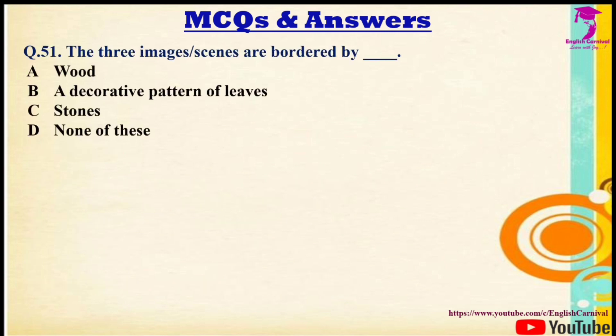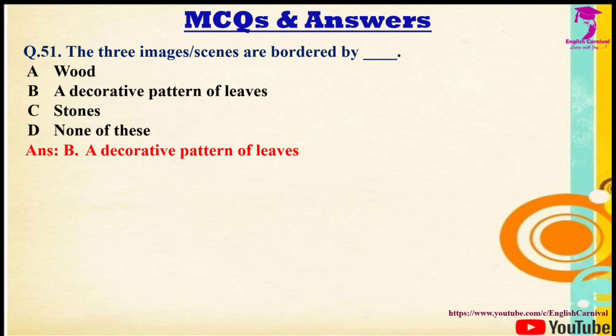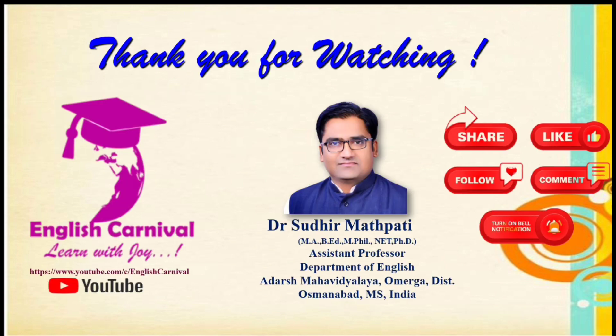Question 51, the last one: The three images or scenes are bordered by — Options: A) Wood, B) A decorative pattern of leaves, C) Stones, D) None of these. The correct answer is B — a decorative pattern of leaves. So friends, all these are the multiple choice questions based on John Keats's most popular compositions: Ode to a Nightingale and Ode on a Grecian Urn.